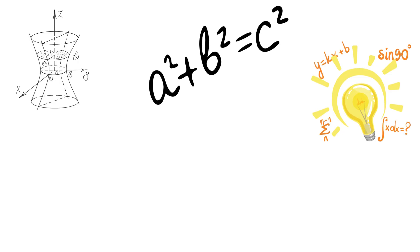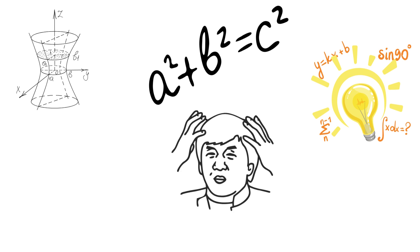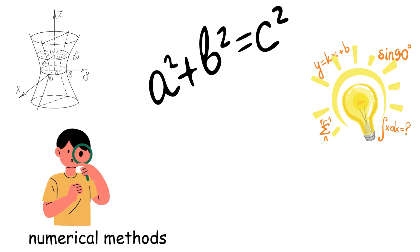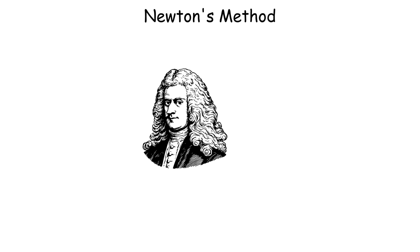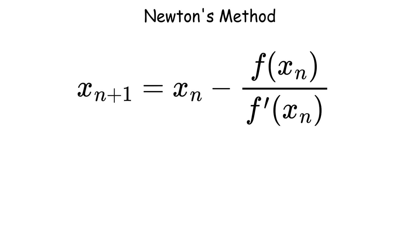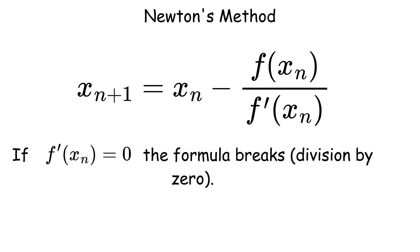But here's the reality. Most equations in engineering mathematics can't be solved analytically. That's where numerical methods come in. These are mathematical algorithms that approximate solutions using iterative calculations. Newton's method finds roots of equations using the iterative formula. It converges quadratically when it works, but can fail if the derivative is zero or if you start too far from the root.